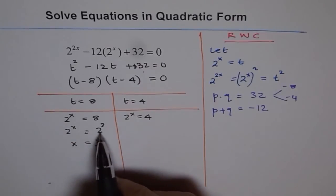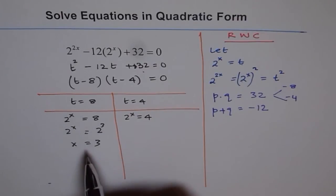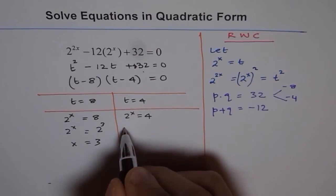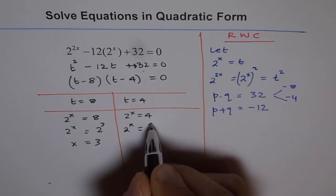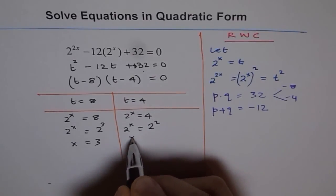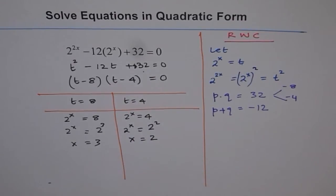So if you have common base, and if the equation is equal, exponents should be the same. Similarly, we will work out this side also. How do you get 4 as a power of 2? 2 to the power of 2 is 4. And therefore, x equals 2 is a solution.